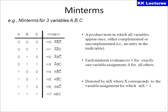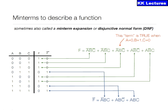For example, 000 represents Ā B̄ C̄ which equals m₀. Likewise, 001 is m₁ where 0 refers to Ā, 0 refers to B̄, and 1 refers to C. Similarly, 010 is m₂ (ĀBC̄), 011 is m₃ (ĀBC), 100 is m₄ (AB̄C̄), 101 is m₅ (AB̄C), and m₇ is AB̄C. Normal variables take value 1 and complemented variables take value 0.